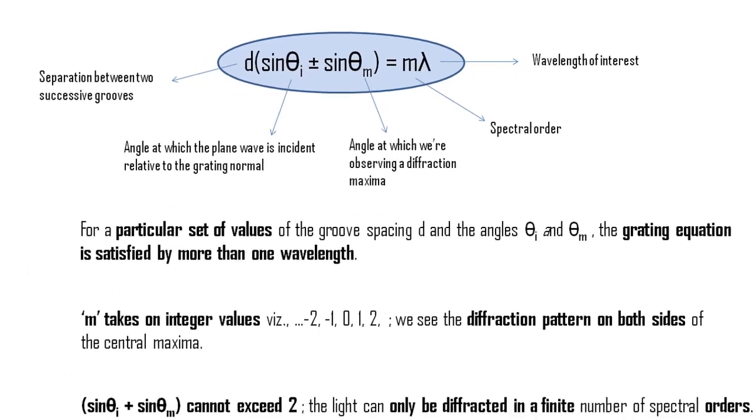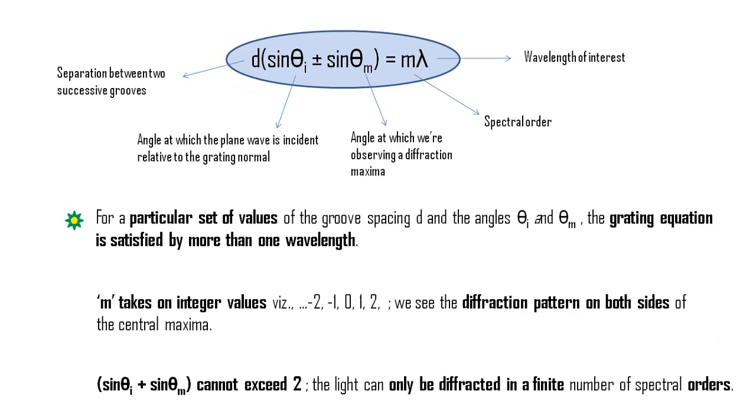The grating equation reveals some important points. For a particular set of values of the groove spacing d and the angles theta i and theta m, the grating equation is satisfied by more than one wavelength. In fact, there may be several discrete wavelengths which, when multiplied by successive integers m, satisfy the conditions for constructive interference. The physical significance of this is that the constructive reinforcement of wavelengths diffracted by successive grooves merely requires that each ray be retarded or advanced in phase with every other. This phase difference must therefore correspond to a real distance, which equals an integral multiple of the wavelength.